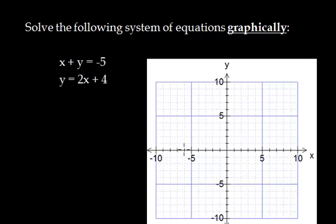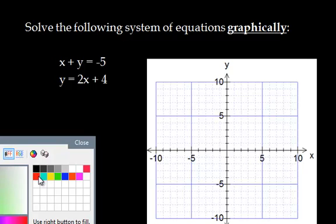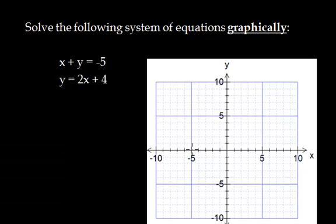And that ended up being an x-intercept at negative 5 and a y-intercept at negative 5. So we've got our x and our y-intercept at negative 5. And we're going to connect these two together with a nice straight line. And this is x plus y equals negative 5.